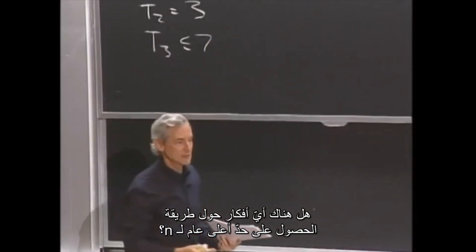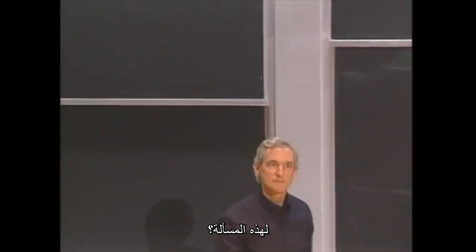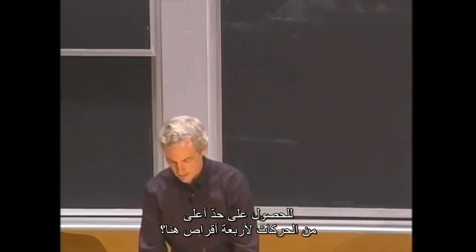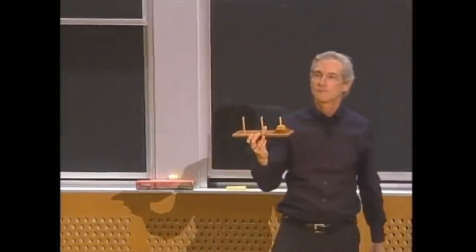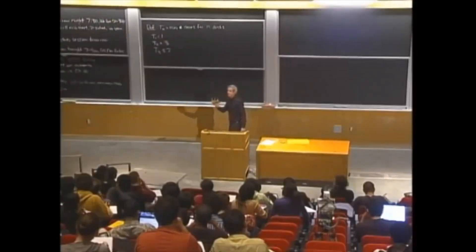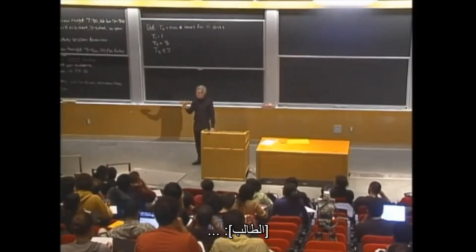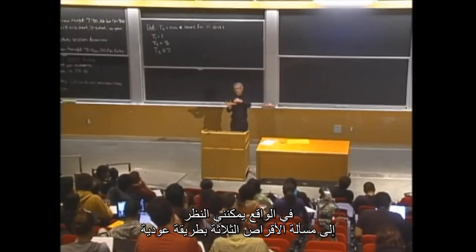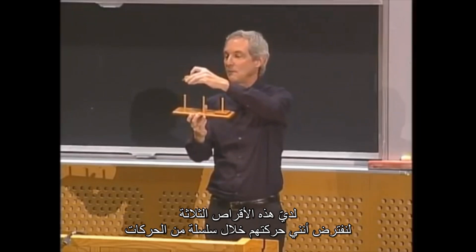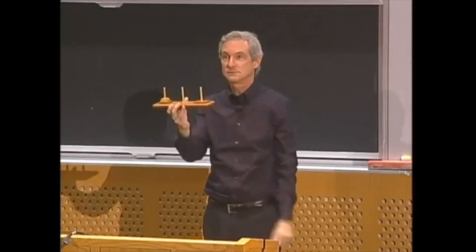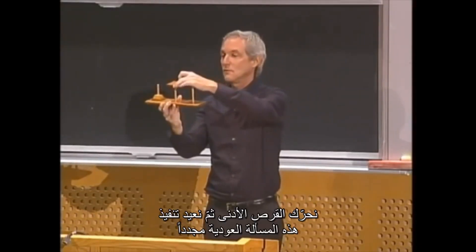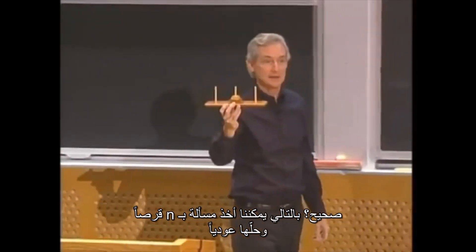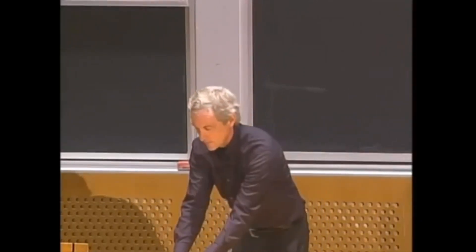Any thoughts about a general upper bound for n? Say I had four disks — any thoughts about a strategy? You can look at the three disk problem and add a certain number of steps. In fact, we can look at the three disk problem recursively. I could move the top three disks in seven steps to one peg, then move the lower one, then do the problem again. So we can take a problem with n disks and solve it recursively.